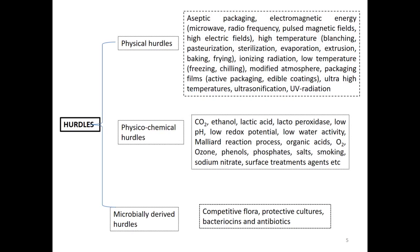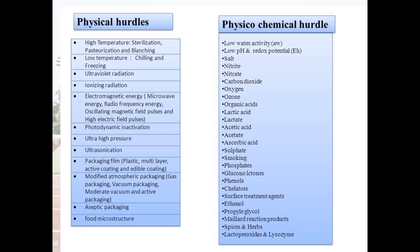Microbially derived hurdles include competitive flora, protective cultures, fatty acids, and antibiotics. Detailed physical hurdles include high temperature methods such as sterilization, pasteurization, and blanching; low temperature methods such as cooling and freezing; UV radiation; ionizing radiation; electromagnetic energy including microwave, radio frequency, oscillating magnetic field pulses, and high electric field pulses; photodynamic inactivation; ultra-high pressure; and ultrasonic treatment. Packaging films include plastic, multi-layer, active coating, and edible coating.